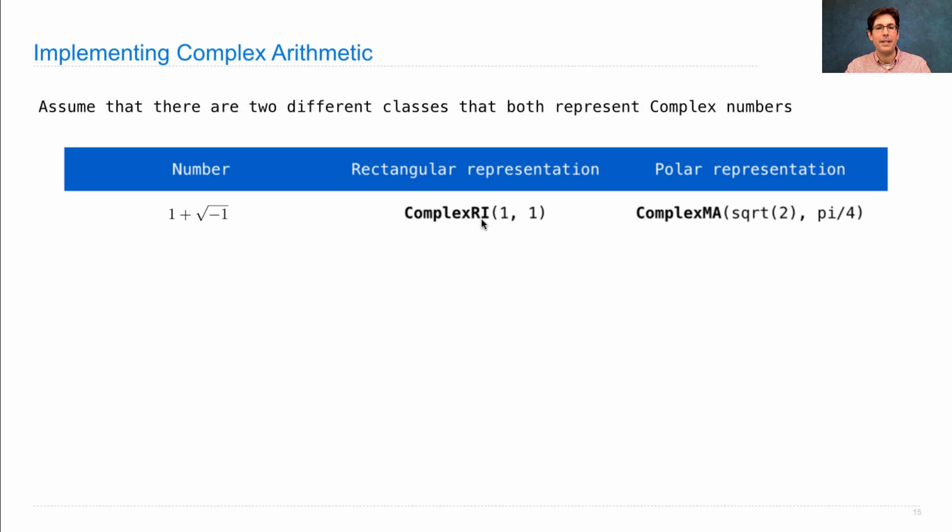We have one called ComplexRI, which takes in the real and imaginary components. And then we have ComplexMA, which takes in the magnitude and the angle that describe the same point. So these are two different descriptions of the same number or the same point in the complex plane.